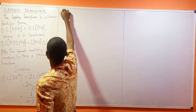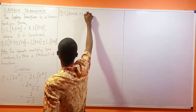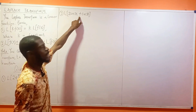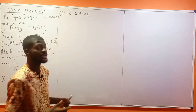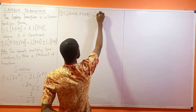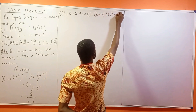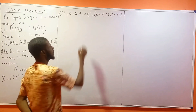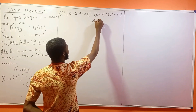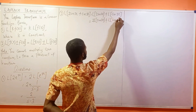Number two: the Laplace transform of 2·sin(3t) + cos(3t). Here we have two functions being added, so I'm going to take the individual transform of each of them. This becomes the Laplace transform of 2·sin(3t) plus the Laplace transform of cos(3t). Since 2 is a constant, this becomes 2 times the Laplace transform of sin(3t) plus the Laplace transform of cos(3t).